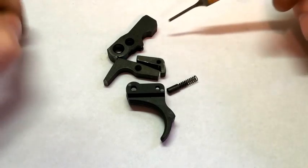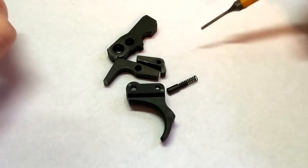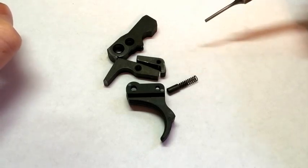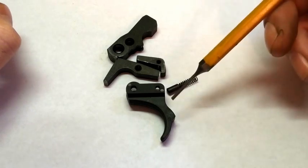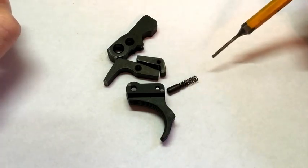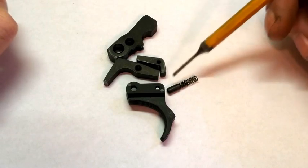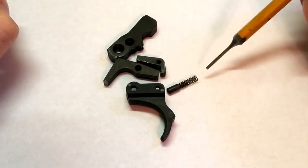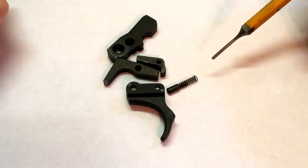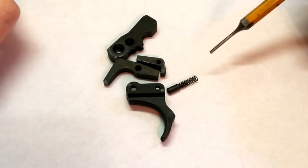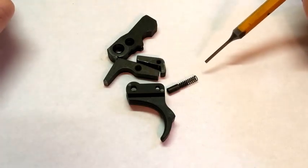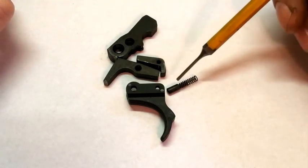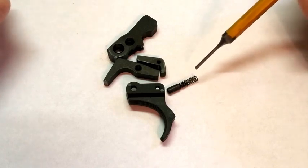If on the other hand it does catch like this, it's locked up like it's supposed to, but you can manually push the trigger forward, then this video will show you how to fix that. The factory trigger return spring requires about a pound and a half to two pounds of force to compress. That's quite a bit if you're aiming for a two pound or two and a half pound trigger pull. That means you're going to have to lighten everything else up quite a bit.